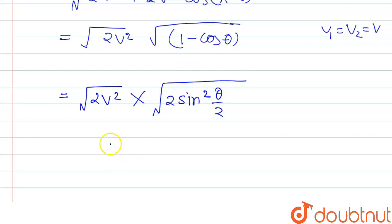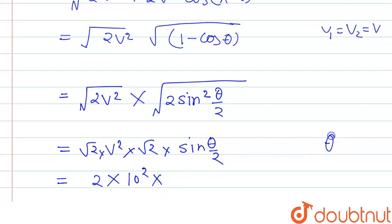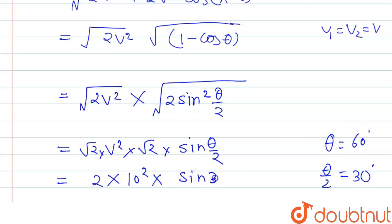Using the identity, (1 − cos θ) = 2sin²(θ/2), so the expression becomes 2V²·(1 − cos θ) = 2V²·2sin²(θ/2). Taking the root, this gives √(4V²·sin²(θ/2)) = 2V·sin(θ/2). Since theta is 60 degrees, theta divided by 2 is 30 degrees, so we write 2V·sin(30°).